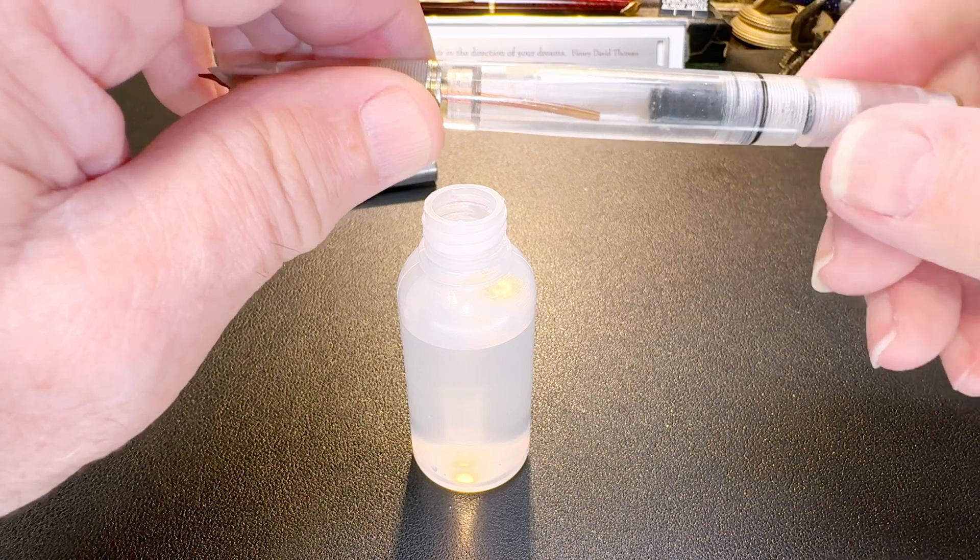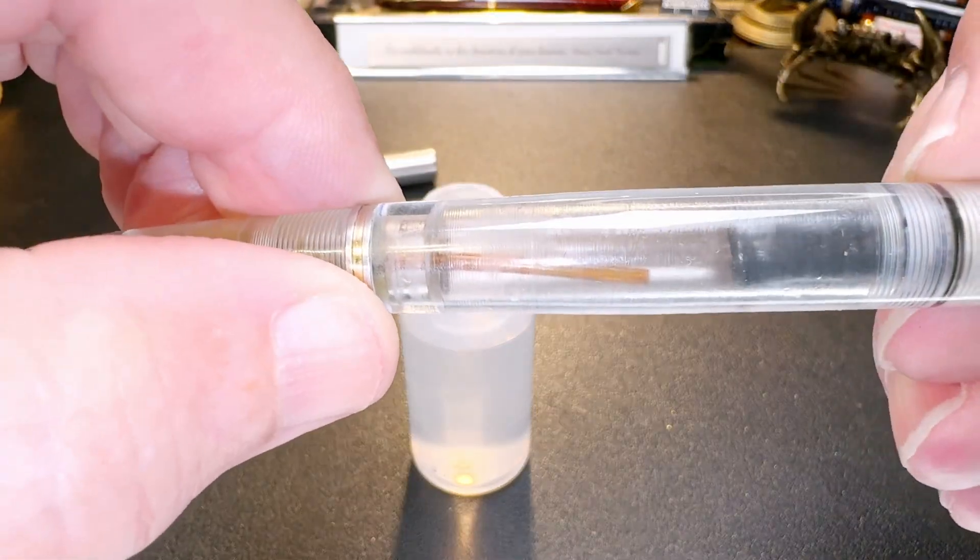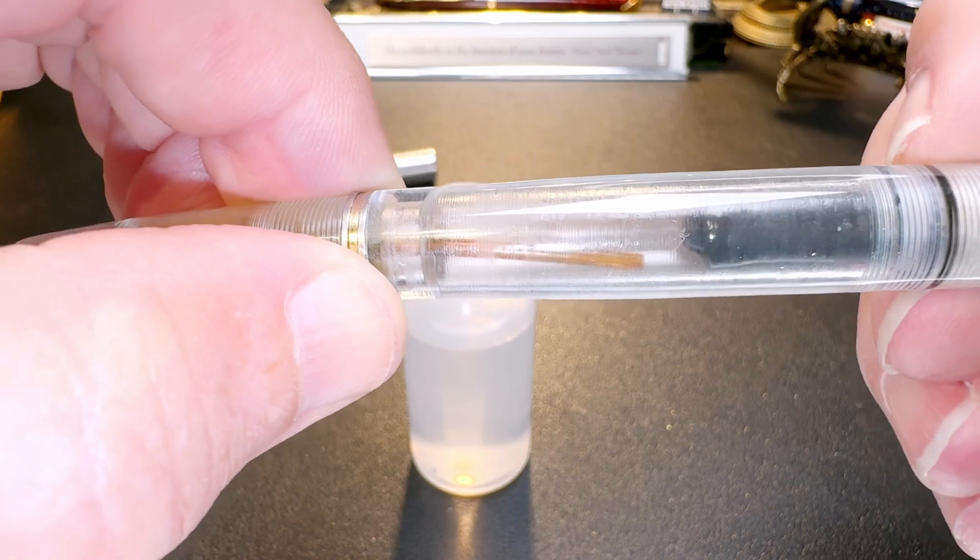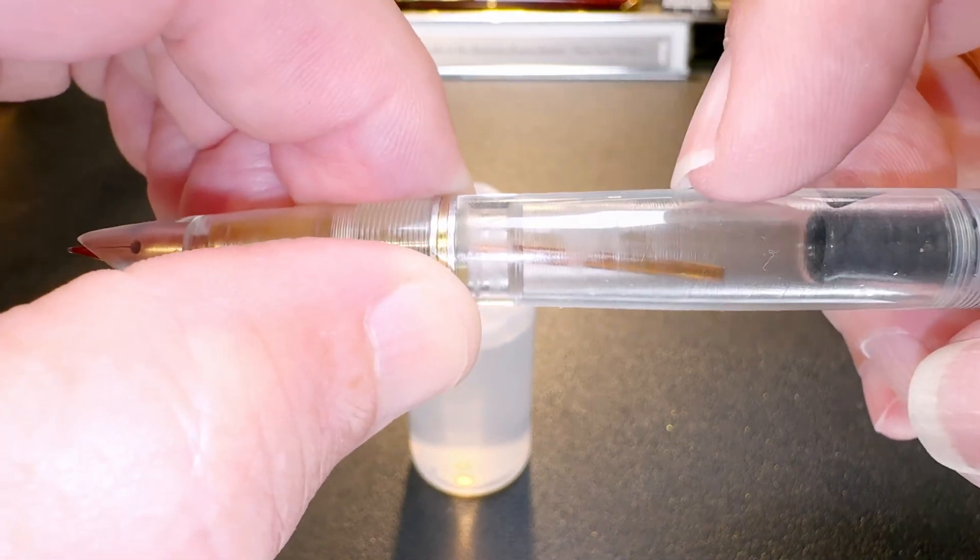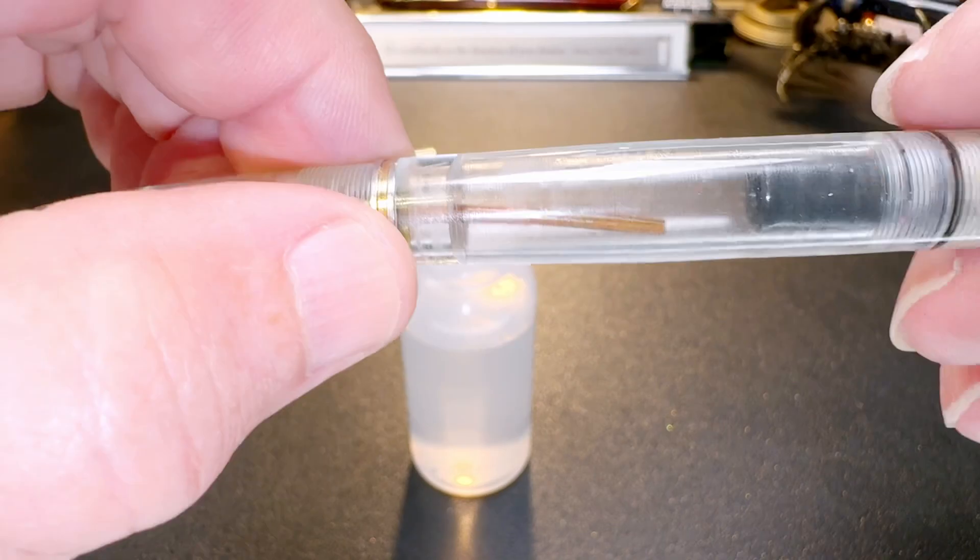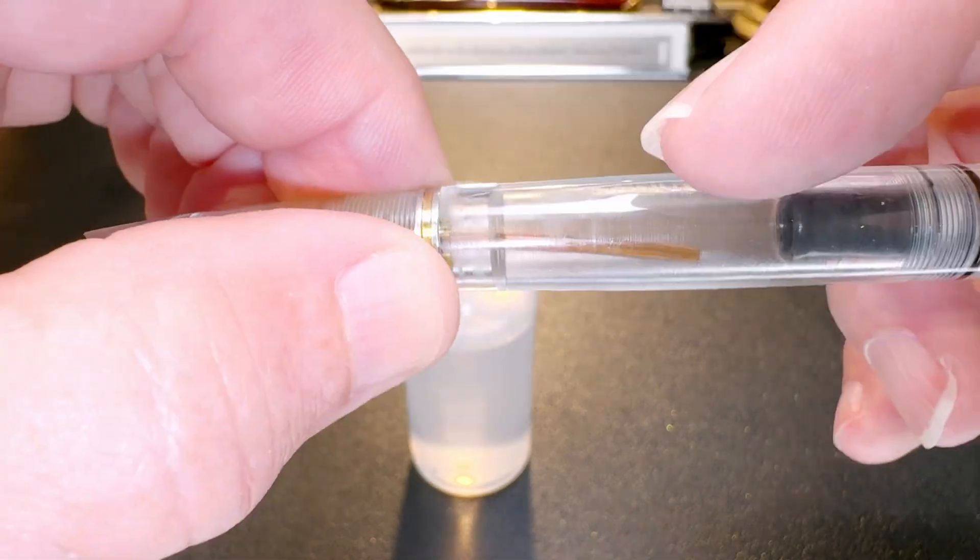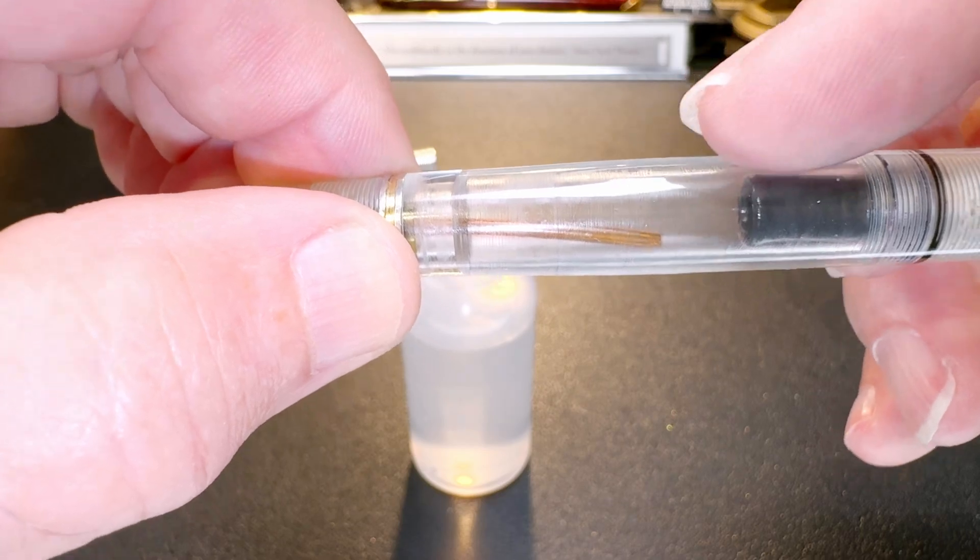We take off the blind cap, and inside you'll see there is a latex diaphragm that moves up and down inside the barrel, and then there's the breather tube that is attached to the feed. Each time you pump this, it will pump air down that breather tube and then pump up ink into the chamber.